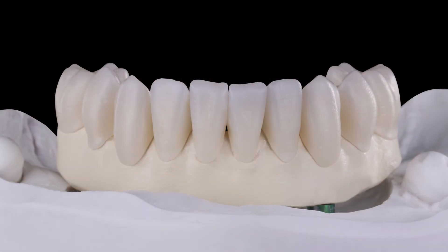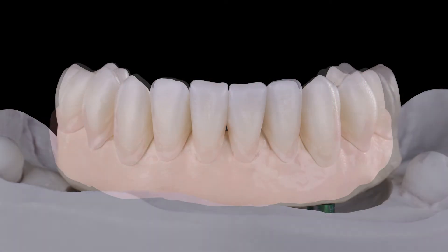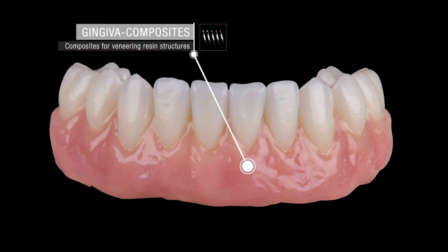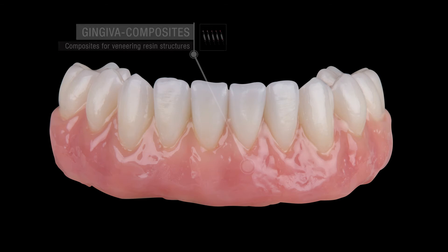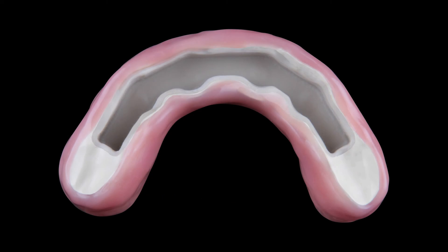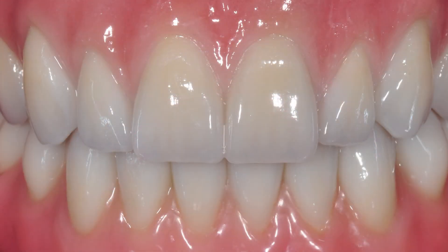For the aesthetic finalization of the structure, the gingiva was layered with gingiva composites. Finally, the friction coping was bonded inside the structure and the final restoration was inserted with friction into the patient's mouth.